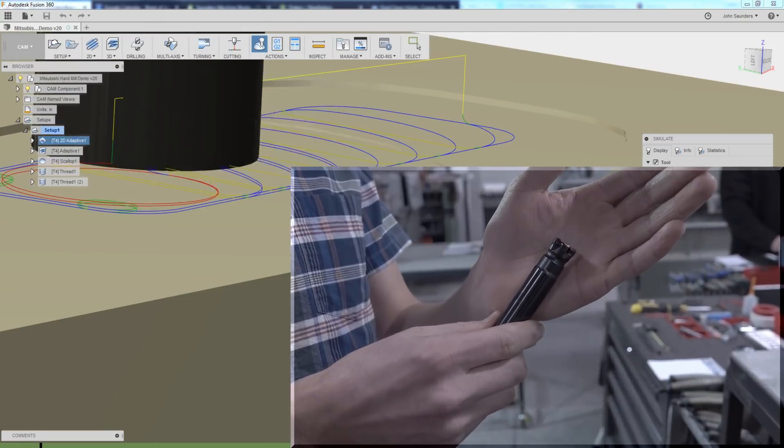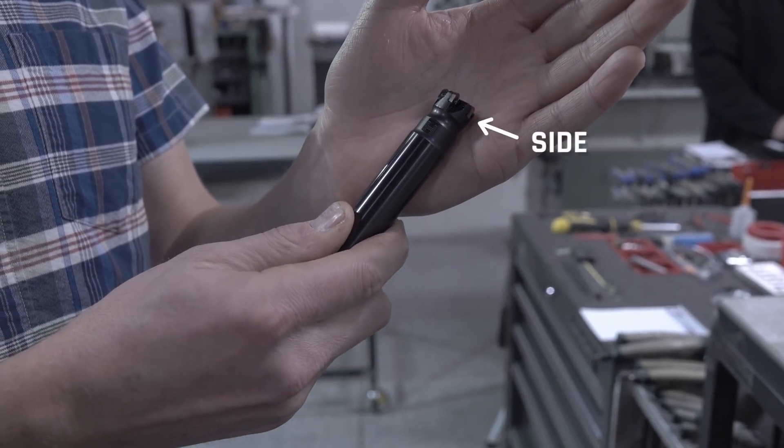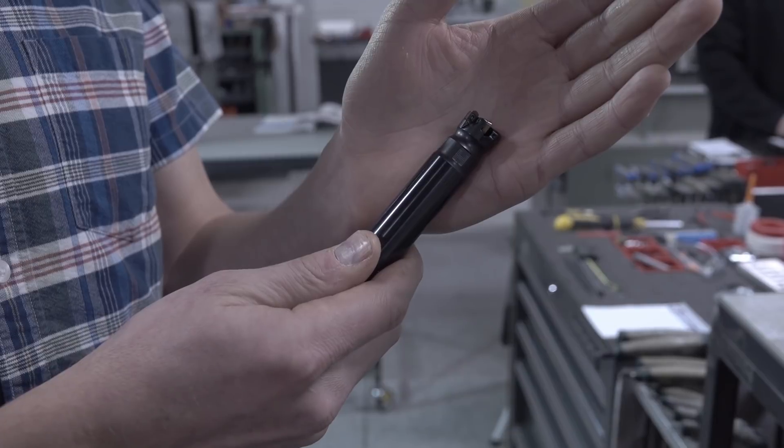And you actually get a chip thinning effect on the face of the tool. I'm used to chip thinning on the side of the tool. So let's chuck this guy up and see how we get along.